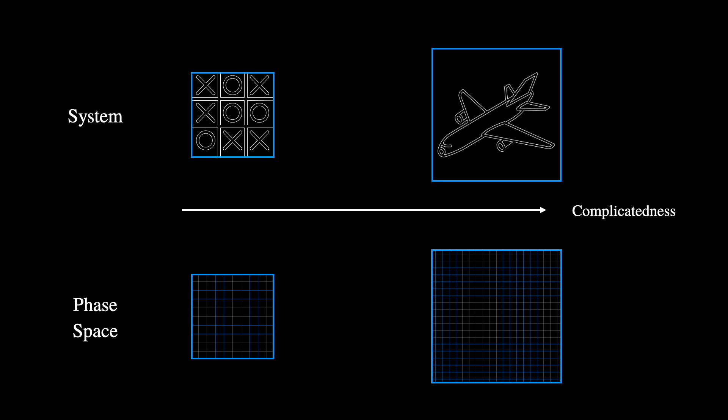A tic-tac-toe game, for example, has a relatively small phase space, as there are quite limited amounts of possible states the game can occupy at any moment. A Boeing 747, on the other hand, is many orders of magnitude more complicated and consequently has a dramatically larger phase space.